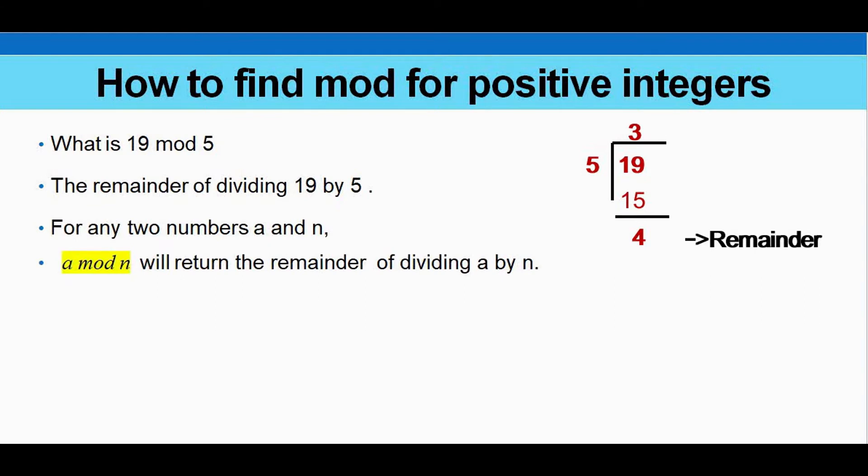So we can have a basic definition of a mod n for any two numbers a and n. a mod n will return the remainder of dividing a by n. The possible remainders when we divide any number by n are from 0 to n minus 1.